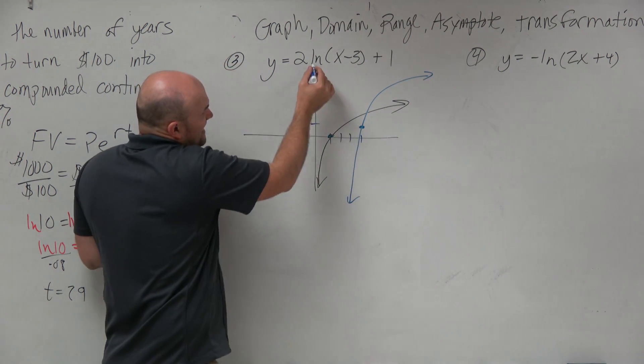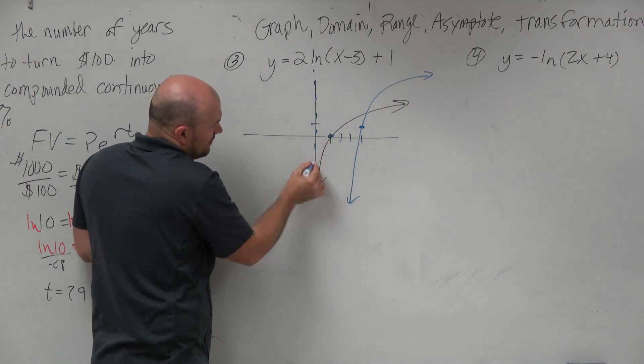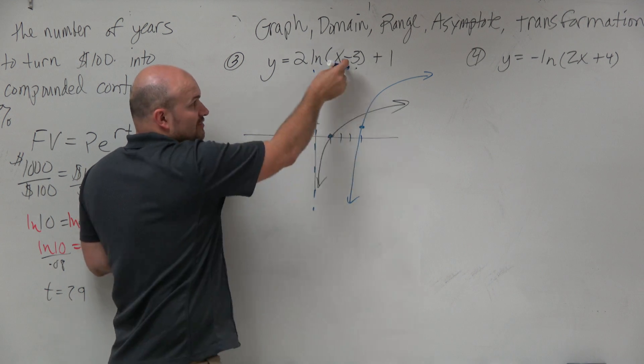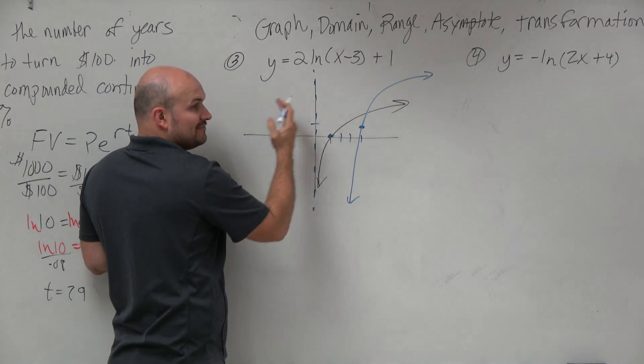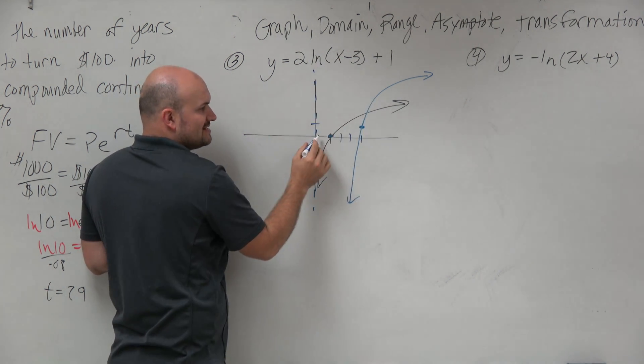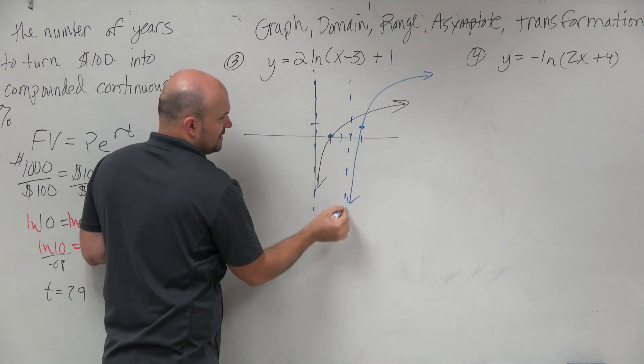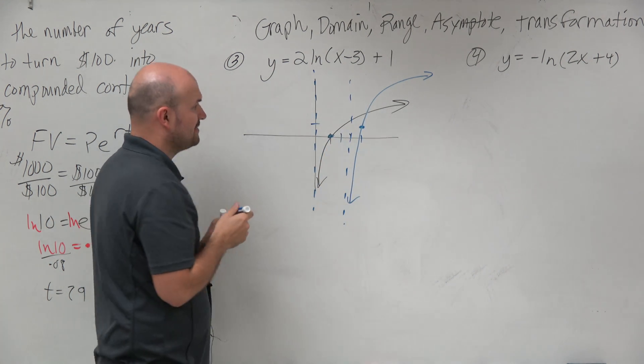I originally have an asymptote at x equals 0. So if I'm shifting my graph 3 units to the right, that means my asymptote is going to be shifting 3 units to the right.